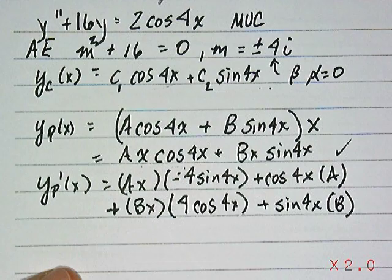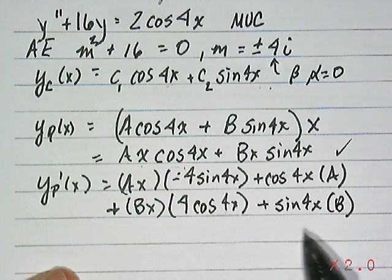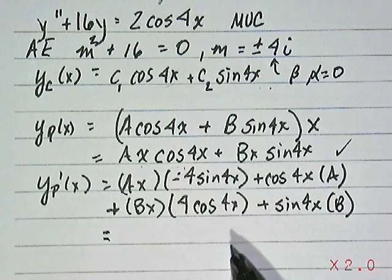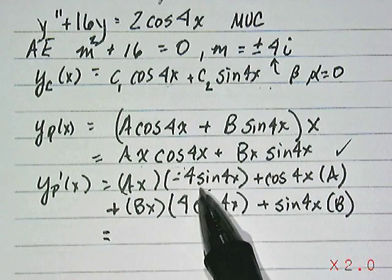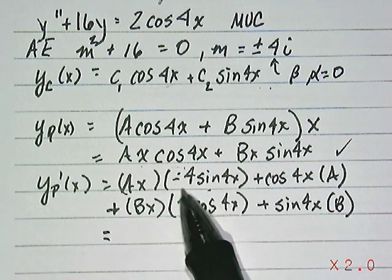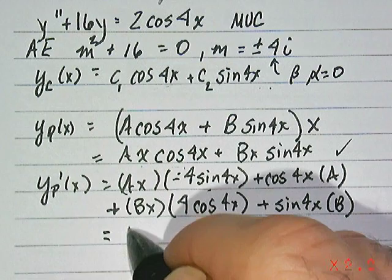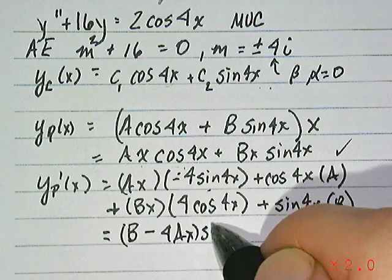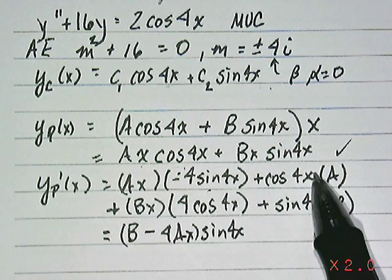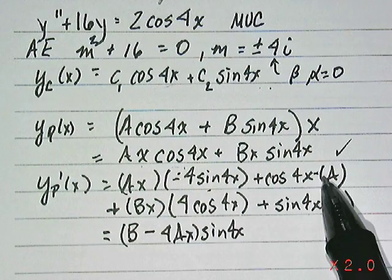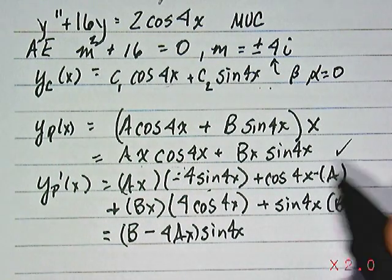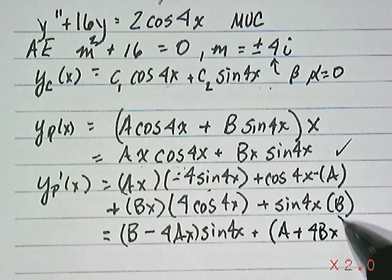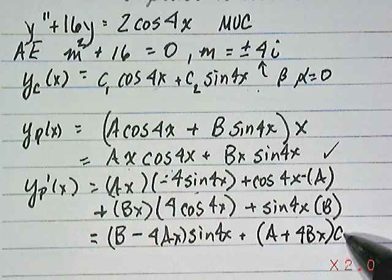So it's probably a good idea to clean these terms up. In other words, find all the matching sine 4x terms and cosine 4x terms before you proceed to compute the second derivative. And so in that case, look for your sine. Let's start off by looking at the sine 4x terms. We've got a minus 4ax here and we've got a B there. So if we collect those terms, we'd have B minus 4ax times sine 4x. Do the same thing for the cosine 4x terms. Here you're going to have an A. Here you're going to have a 4 times Bx, right?